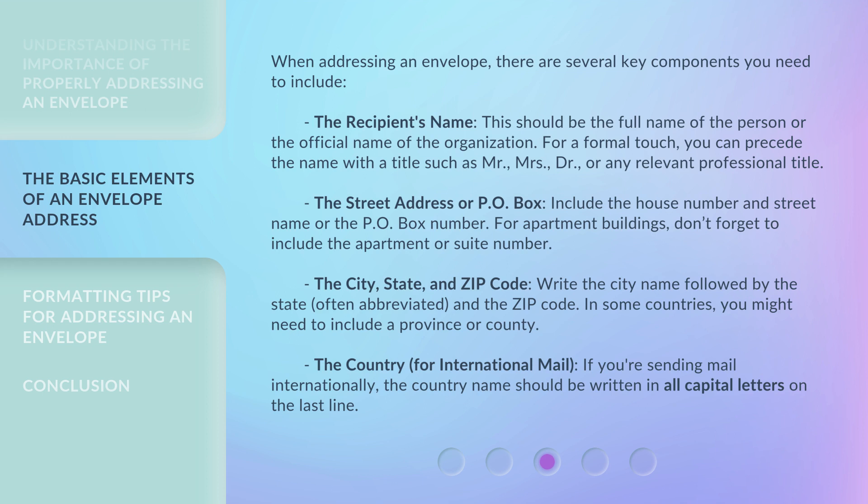For apartment buildings, don't forget to include the apartment or suite number. The city, state, and zip code: write the city name followed by the state, often abbreviated, and the zip code. In some countries, you might need to include a province or county.